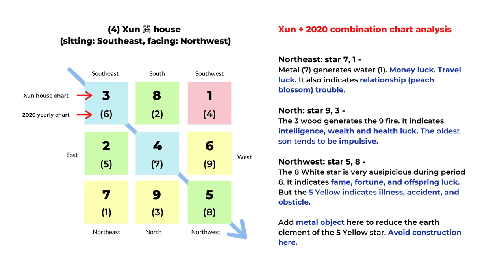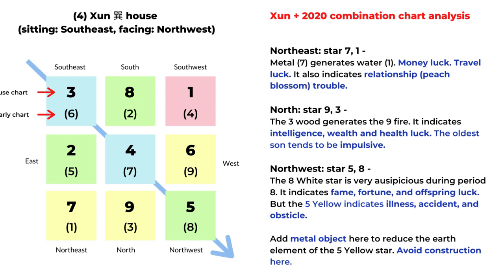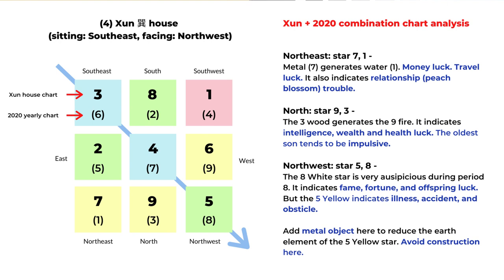Next is the northeast with stars seven and one. Seven is metal and generates one, which is water, indicating money luck and travel luck. If you travel to a faraway place, it can bring money luck. However, the seven-one combination can also mean relationship trouble or peach blossom trouble, so watch out for your romantic relationship. In the north area, we have nine and three stars. The three is the wood element that generates the number nine fire element, indicating intelligence, wealth, and health luck. There's a tendency for the oldest son to be impulsive with this combination, but generally it's an auspicious combination.